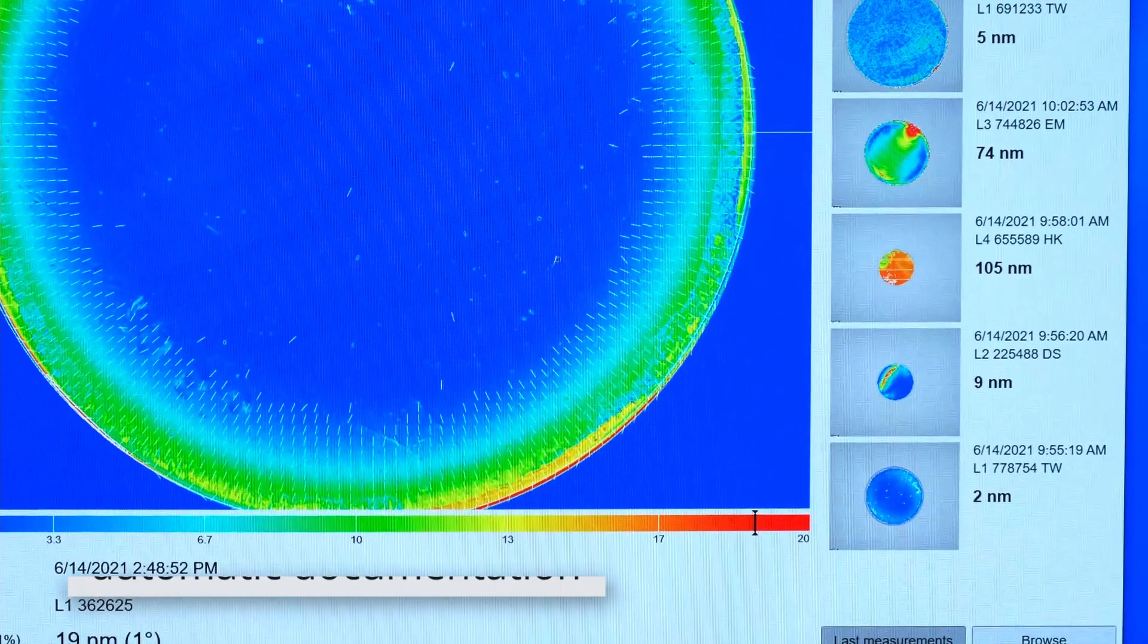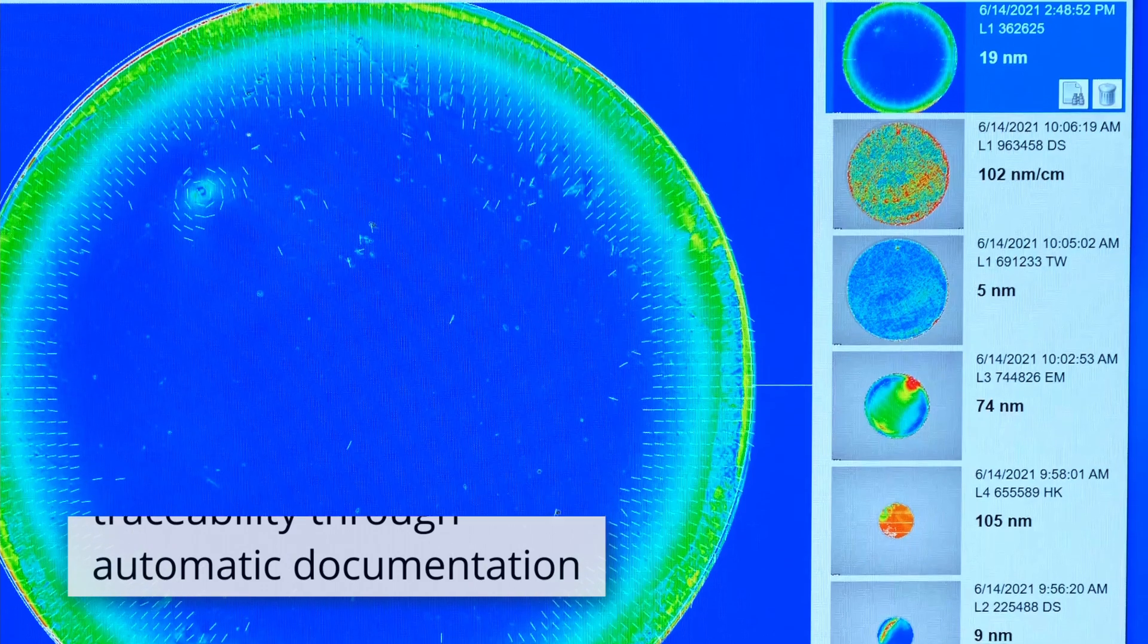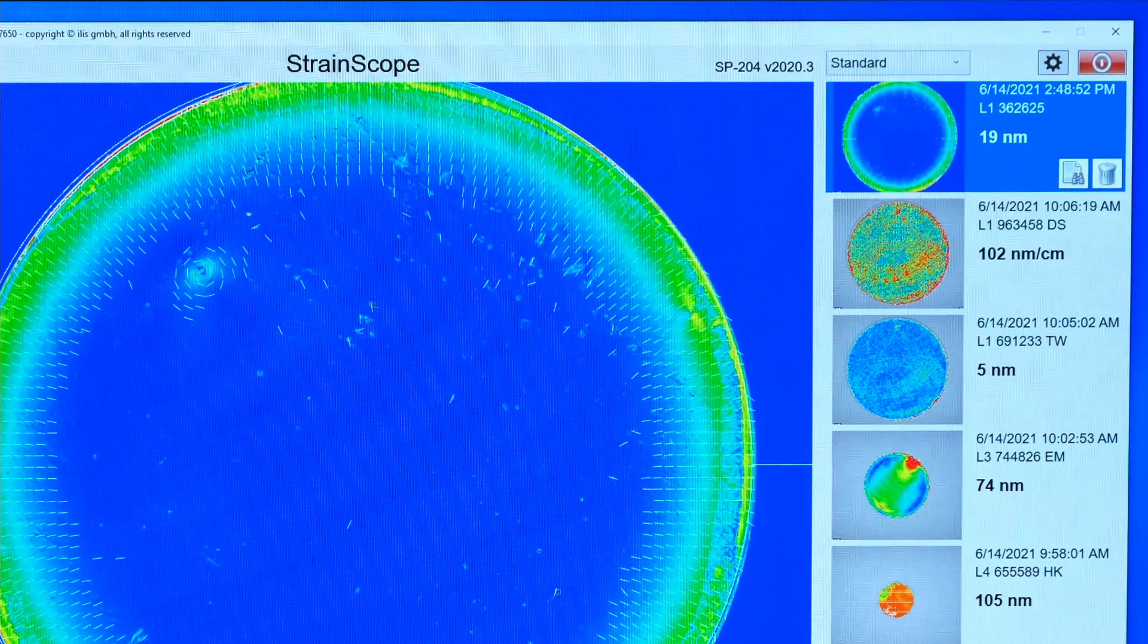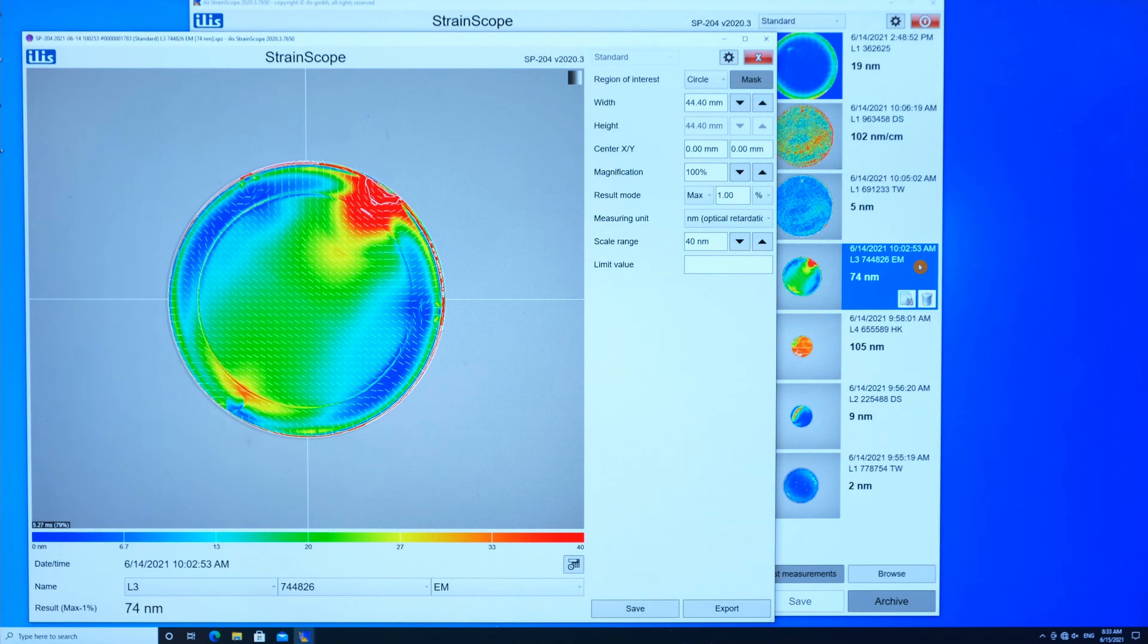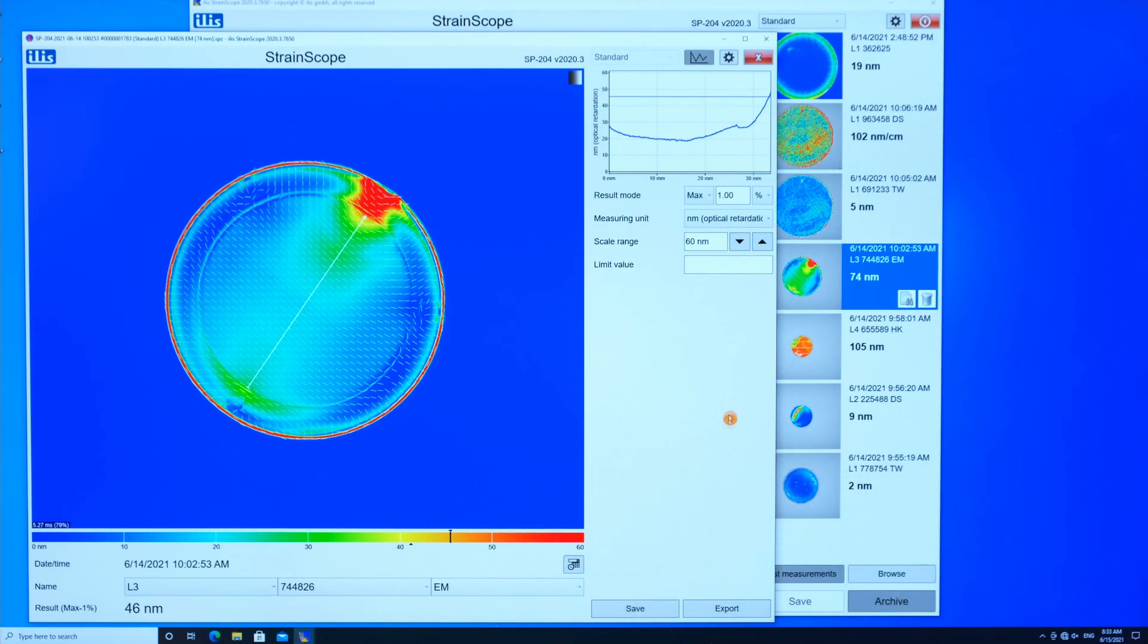Measurements can be saved in the integrated archive. This ensures complete documentation and traceability of all results. The saved raw data can be further processed and evaluated in the StrainScope software or converted into an open file format using the convenient export function.